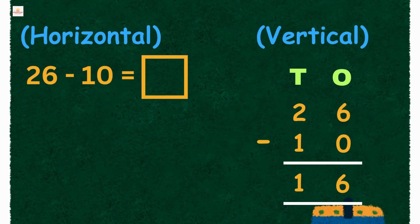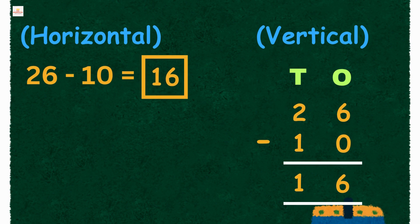So 26 minus 10 equals 16. The answer is the same in both ways: horizontal and vertical. Nice work, mini mathematicians!